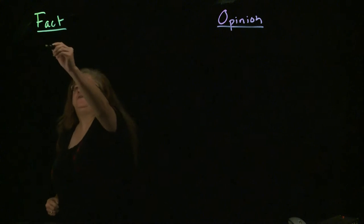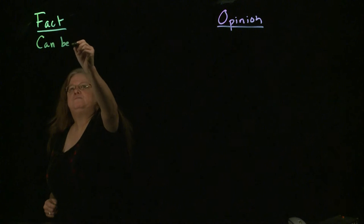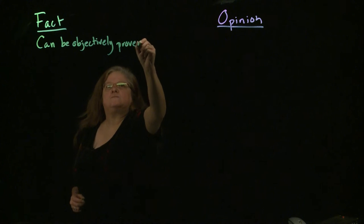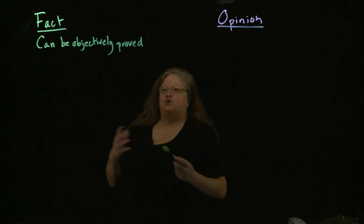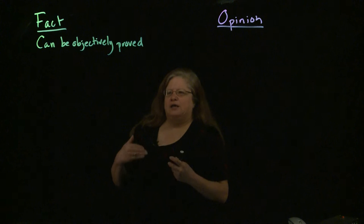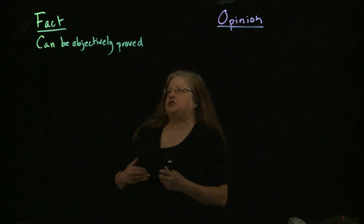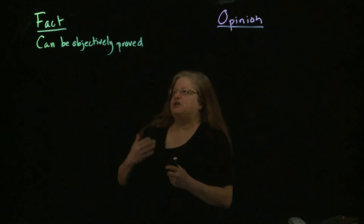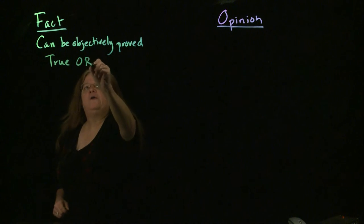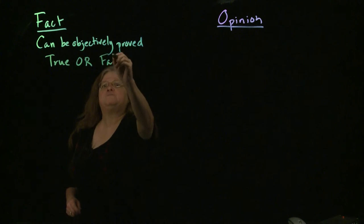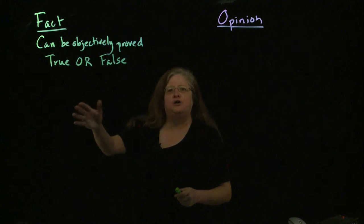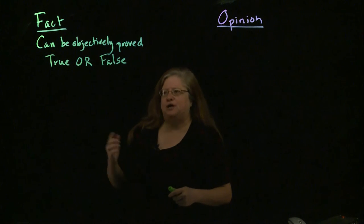A fact is something that can be objectively proved. That is to say, you can go and observe something and see it for yourself, or you can go and look at reliable sources of information and you'll see facts. Those are things you can objectively prove — and they can be proved true or they can also be proved false. So if you have something that's a fact, even if you prove it false, it's still not an opinion. Being false doesn't make it an opinion; it's just a false fact.